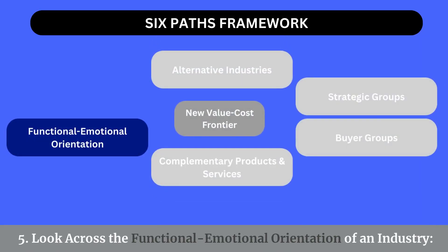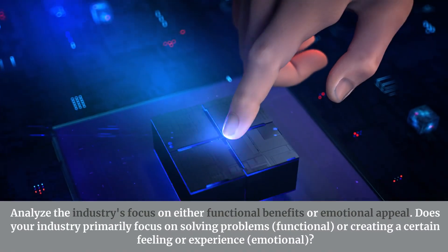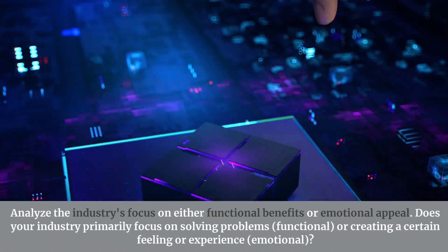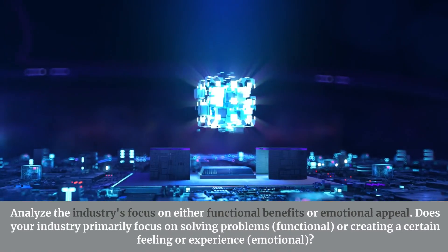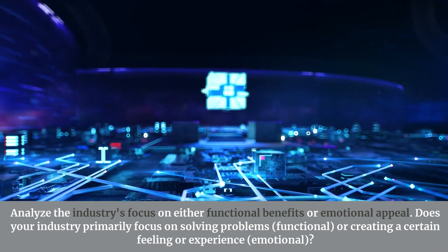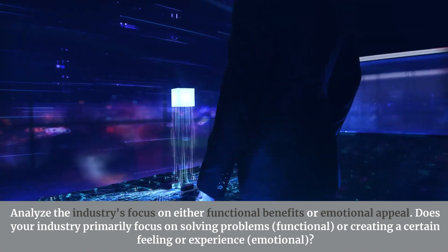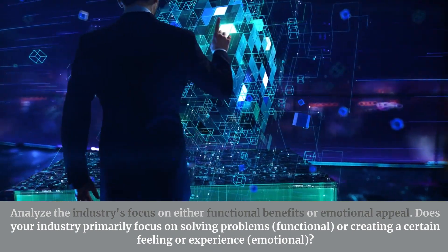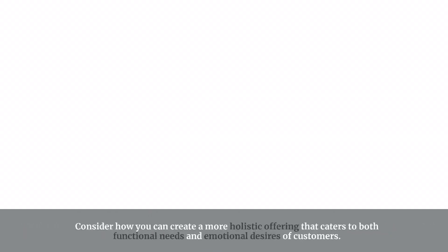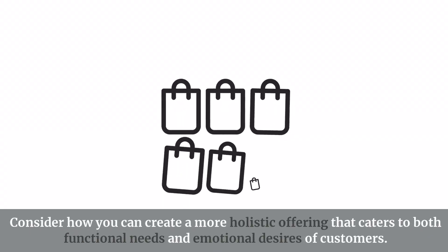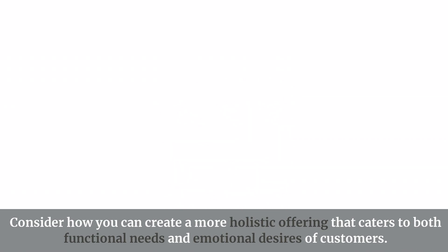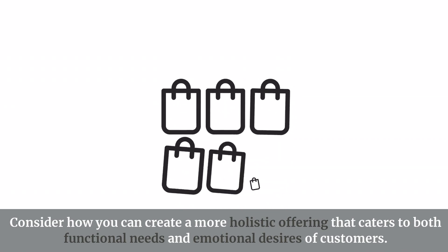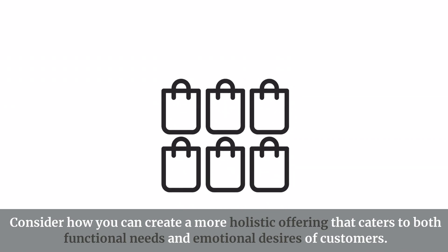Path 5: Look across the functional-emotional orientation of an industry. Analyze the industry's focus on either functional benefits or emotional appeal. Does your industry primarily focus on solving problems — functional — or creating a certain feeling or experience — emotional? Consider how you can create a more holistic offering that caters to both functional needs and emotional desires of customers.